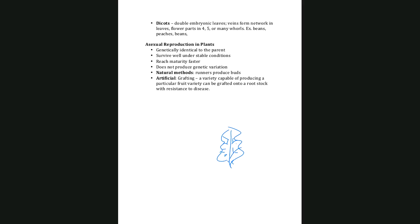Asexual reproduction in plants produces genetically identical offspring. These do well as long as conditions aren't changing, because there won't be much genetic diversity to adapt to changing conditions. However, they can reach maturity faster. Naturally this happens through runners that come up and produce buds for a new plant. Artificially it happens through grafting — taking a graft of a plant and growing it instead of using normal fertilization.